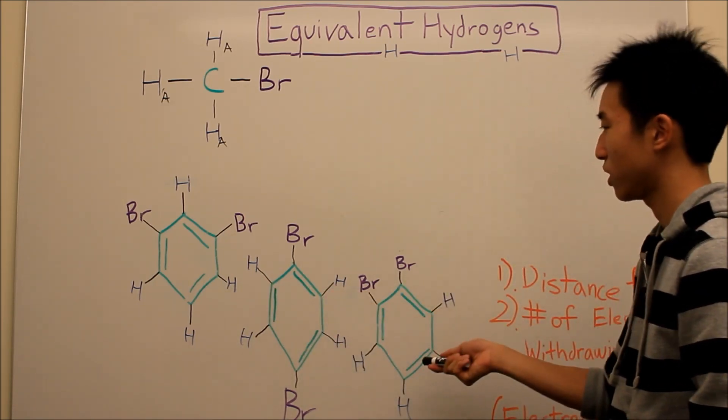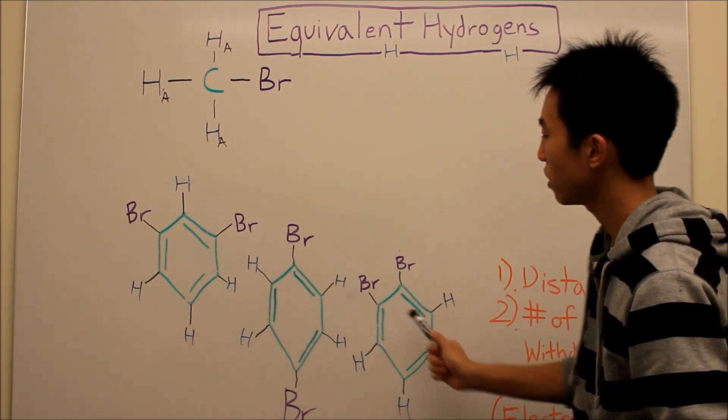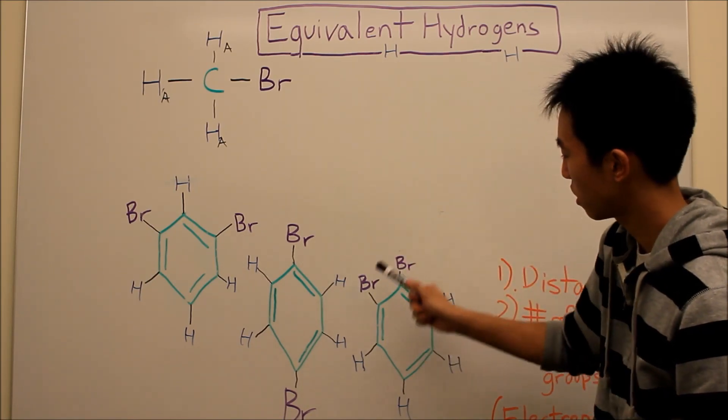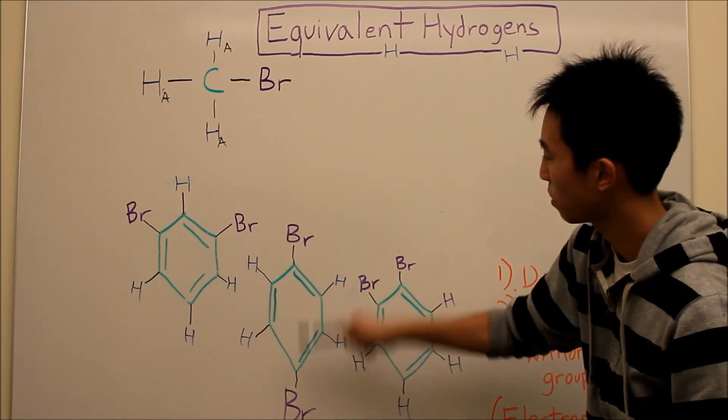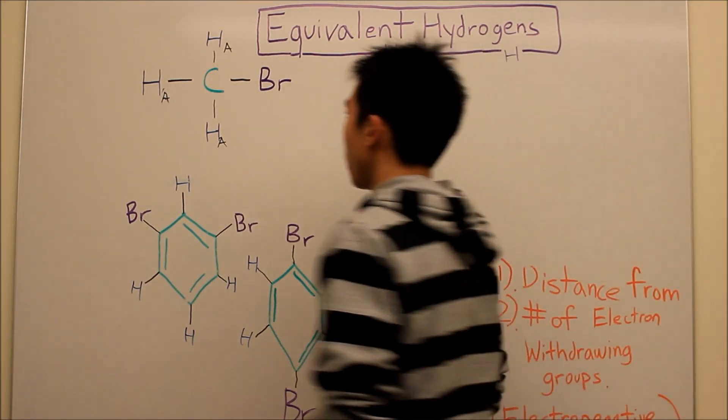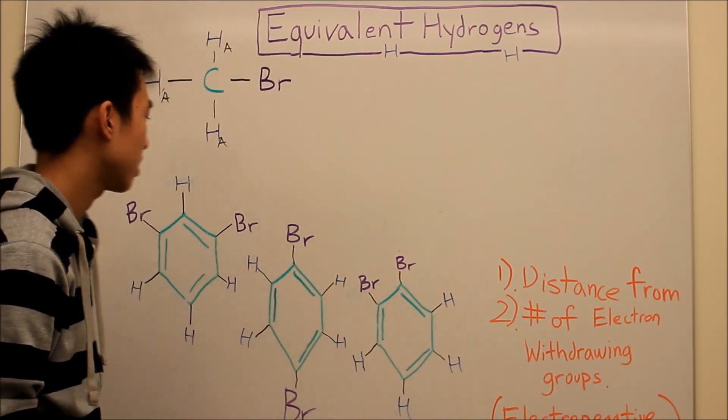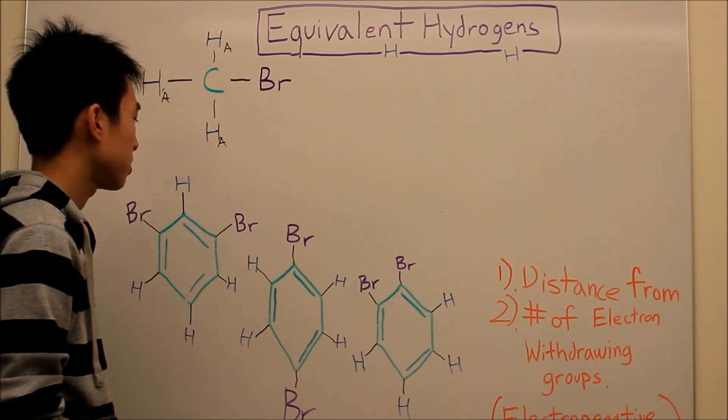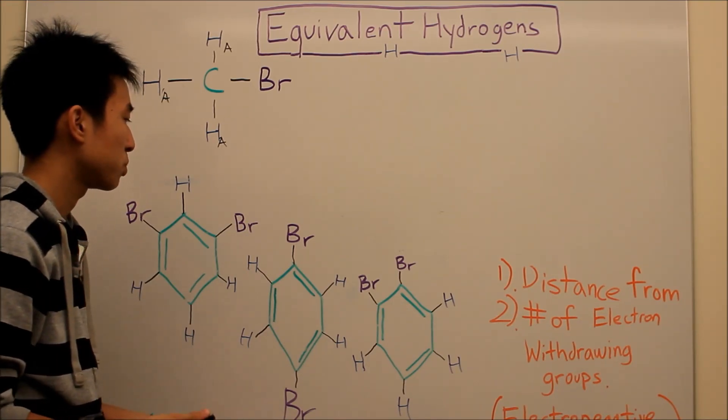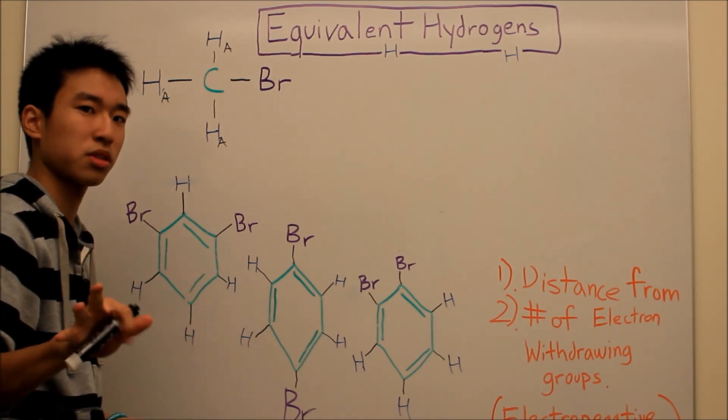Next we're going to look at these three molecules here. They're all benzene rings with two bromines attached. I want you to use this analysis here and what we did before to figure out how many different groups of hydrogens are there. Pause the video, take a look, and come back.